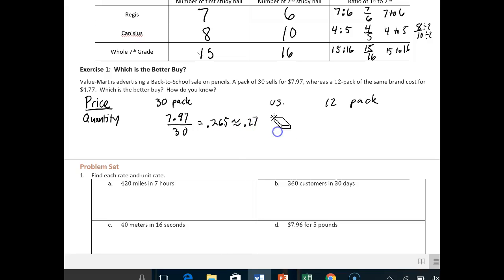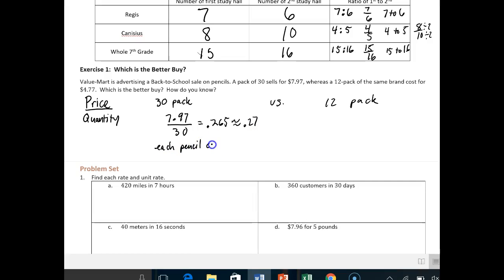So this is about equal to 0.27. So what does this mean? It means that each pencil in a 30-pack costs about $0.27. Not $27, $0.27. And that makes sense because you take a whole bunch of 27s multiplied by 30. You'll get close to about $7.97.